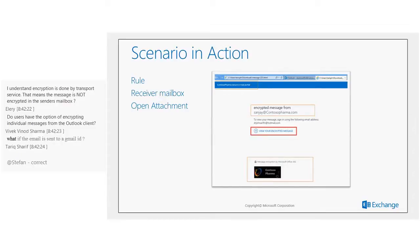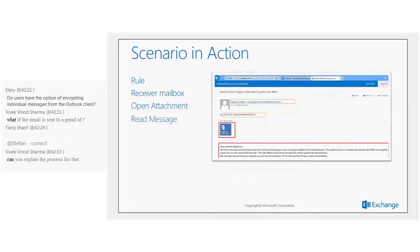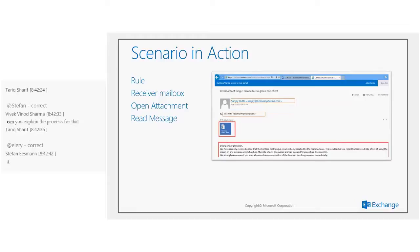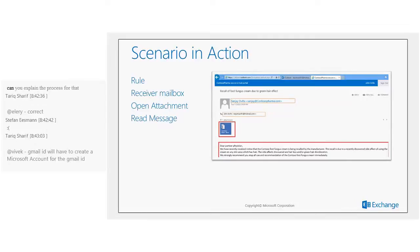As a recipient, clicking 'View your encrypted message' authenticates you against your Microsoft account, allowing you to see the message in plain text. John already had a Microsoft account so he was authenticated. If the recipient's address is a Yahoo.com address and they're logging in for the first time, they would be asked to create a Microsoft account using that email address — a very easy step with documentation available.